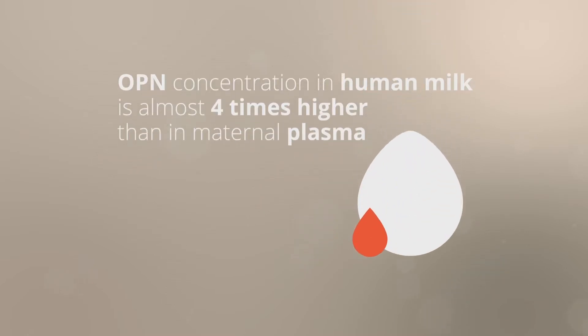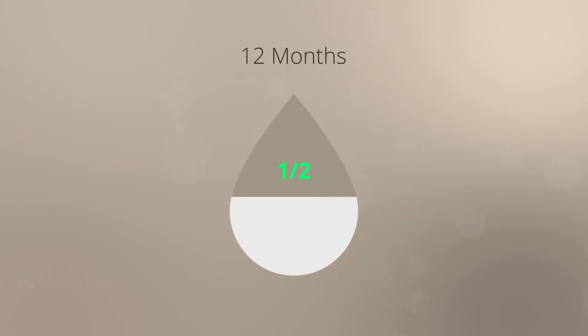OPN concentration in human breast milk is almost 4 times higher than in maternal plasma and decreases as lactation progresses, remaining at about half of the maximum concentration after 1 year.